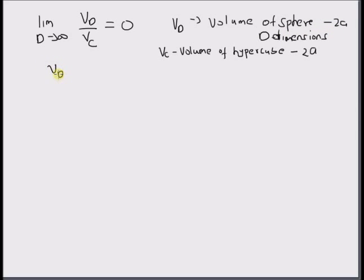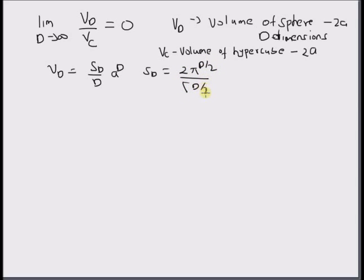In the previous video, we learned that the volume of a sphere of d dimensions is given by Sd divided by d, multiplied by a^d, where a is the radius of the sphere. And we also know that Sd is given by 2*pi^(d/2) divided by gamma(d/2).